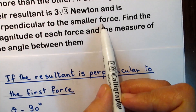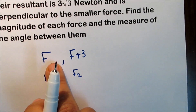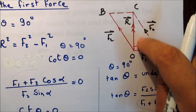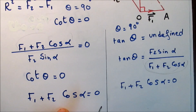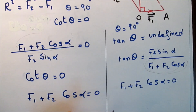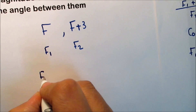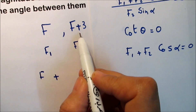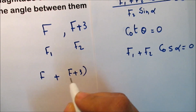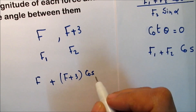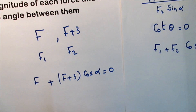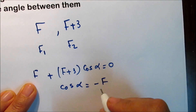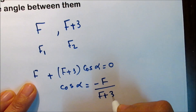Since the resultant is perpendicular to one of the two forces, we use the condition F1 + F2·cos α = 0. Substituting f1 = f and f2 = f + 3: f + (f + 3)·cos α = 0. Solving for cos α: cos α = −f / (f + 3).